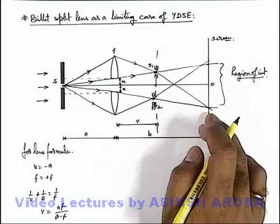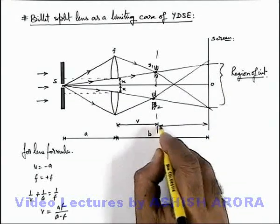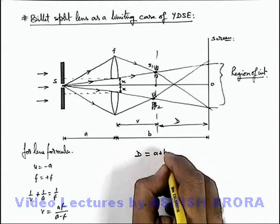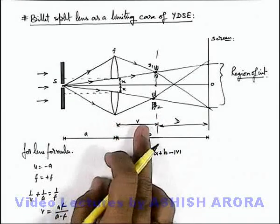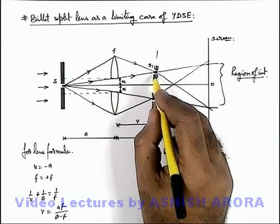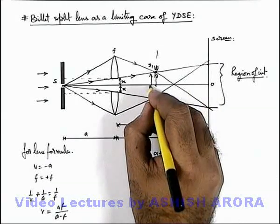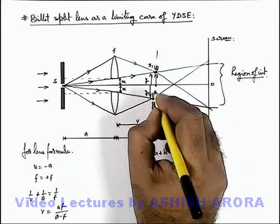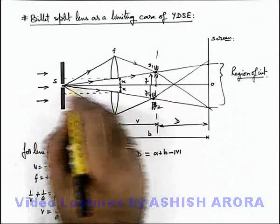In this region of interference, we can find out the fringes because this distance we consider as capital D, and here the value of capital D we can consider as a plus b minus the magnitude of this v, which is the distance between the image plane and the lens. Small d, which is the separation between the slits, can be easily calculated by using normal magnification, as if the image of the slit is obtained at a distance y and y.